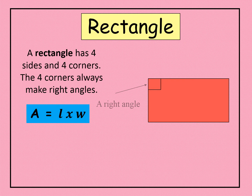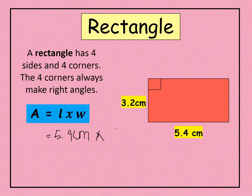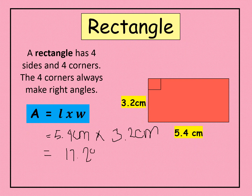For better understanding, let's have an example. We have a rectangle with a width of 3.2 centimeters and a length of 5.4 centimeters — the longer side is the length and the shorter side is the width. Substituting into the formula, 5.4 centimeters times 3.2 centimeters gives us 17.28 square centimeters.